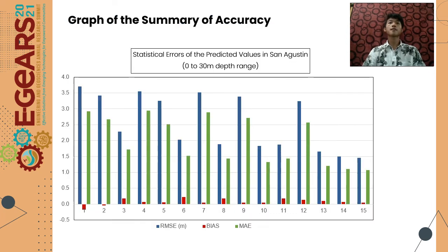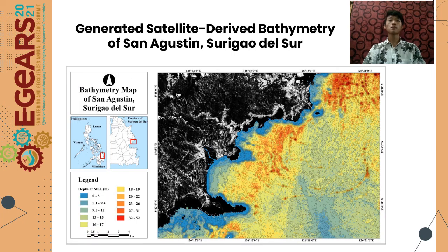The graph summarizes the accuracy of the 15 models. It can be seen that Model 15, or the combination of the four bands, has the highest accuracy in terms of RMSE, bias, and mean absolute error. The root mean square error obtained for the combination of four bands is 1.456 meters. The model equation of the highest accuracy was then used to generate the satellite-derived bathymetry of San Agustin, and the derived satellite bathymetry map of San Agustin is shown.